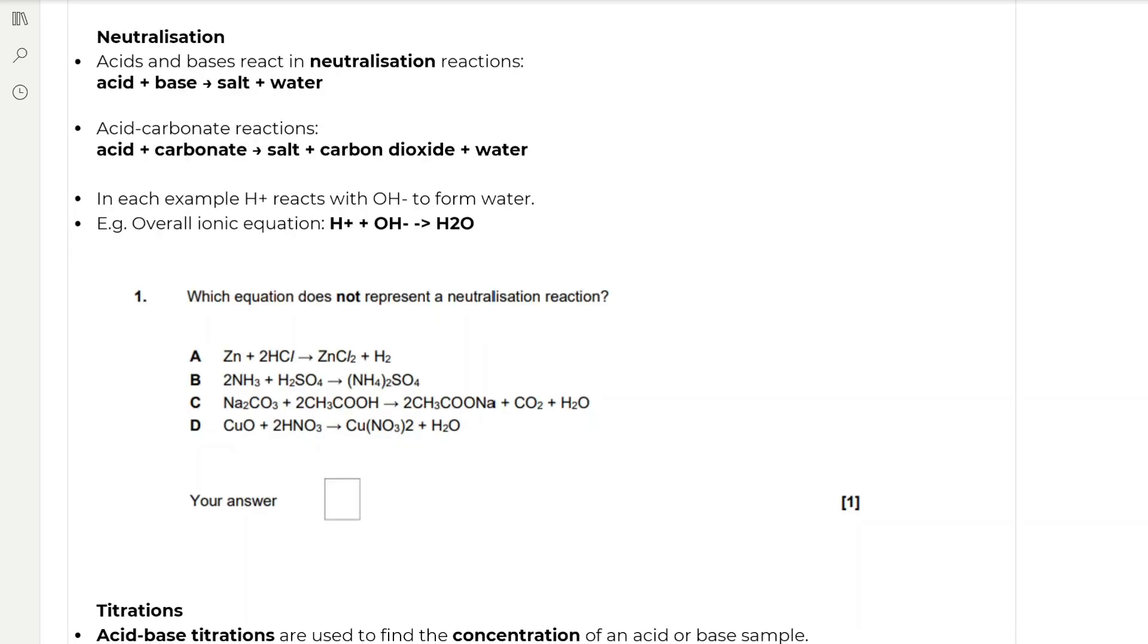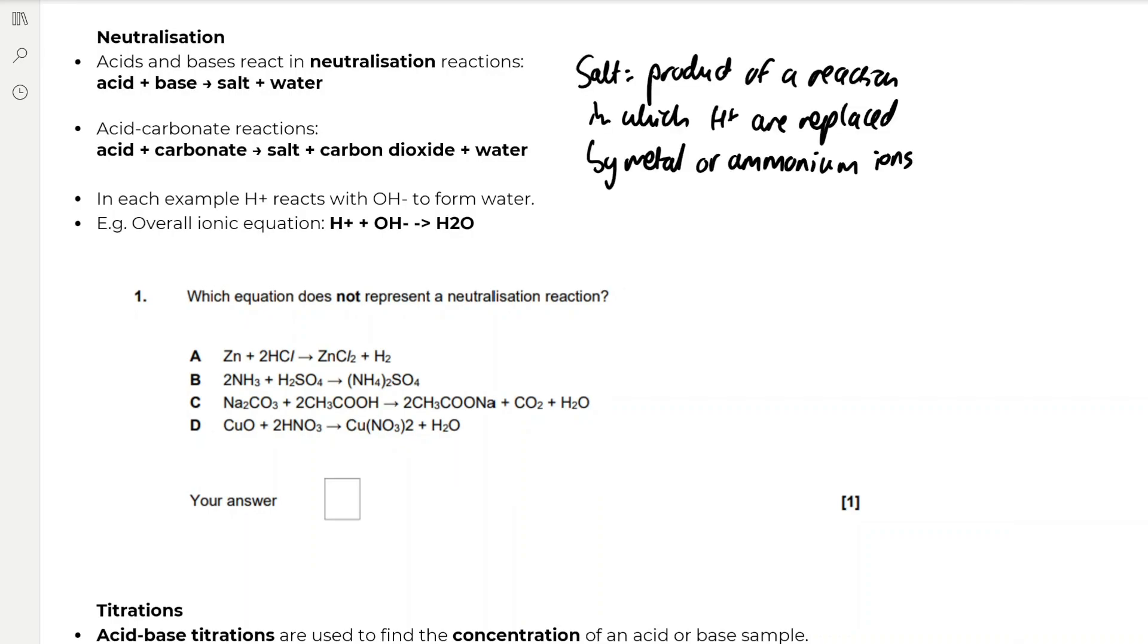And then we have neutralisation reactions. Acids and bases react in neutralisation reactions. When an acid and a base react, they form a salt and water. Remember the definition of a salt is the product of a reaction in which H+ ions are replaced by ammonium or metal ions. And then we have acid carbonate reactions. An acid and a carbonate react to form a salt, carbon dioxide gas, and water. In each example, H+ reacts with OH- to form water, giving the overall ionic equation H+ plus OH- forms H2O.